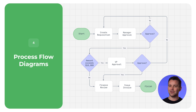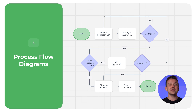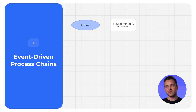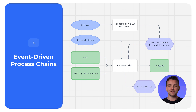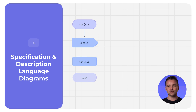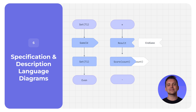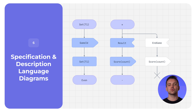Coming from the world of mechanical engineering, process diagrams are useful across all industries for developing, standardizing, and streamlining processes. Event-driven process chains model business processes as a chain of events that influence each other — great for modeling and analyzing business operations and resource planning. Specification and description language diagrams translate technical requirements and specs into visual form, and are most often used in industries with complex systems, like telecoms, aviation, and medicine.